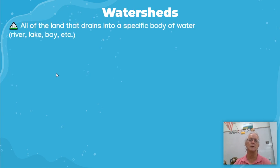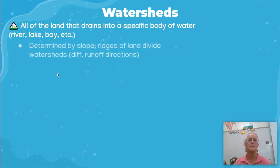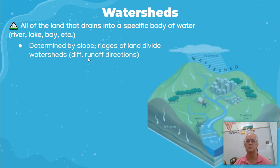So a watershed is all the land that drains into a specific body of water — for example, into a river, lake, bay, stream, or whatever. It's determined by the slope and ridges of land that divide the watershed into different runoff directions.